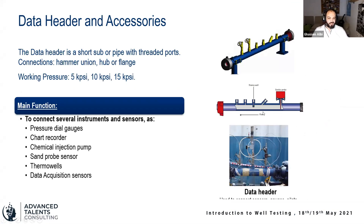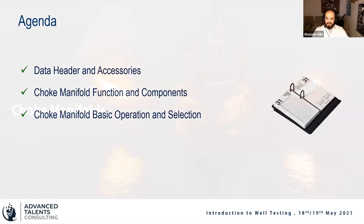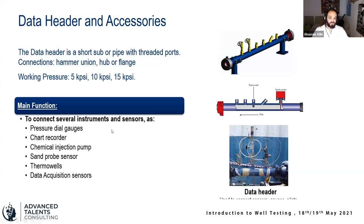The first piece of equipment the flow passes through is the data header — a simple piece of pipe with threaded inserts. This allows multiple measurement points for pressure and temperature where we connect dial gauges and chart recorders. We can also attach a chemical injection pump, which is important for wells with high gas rates, sand probe sensors measuring erosion from sand production, and thermowell inserts for inline temperature measurement and data acquisition. No well test setup is complete without a surface data acquisition network, and upstream pressure is typically measured here at the data header.